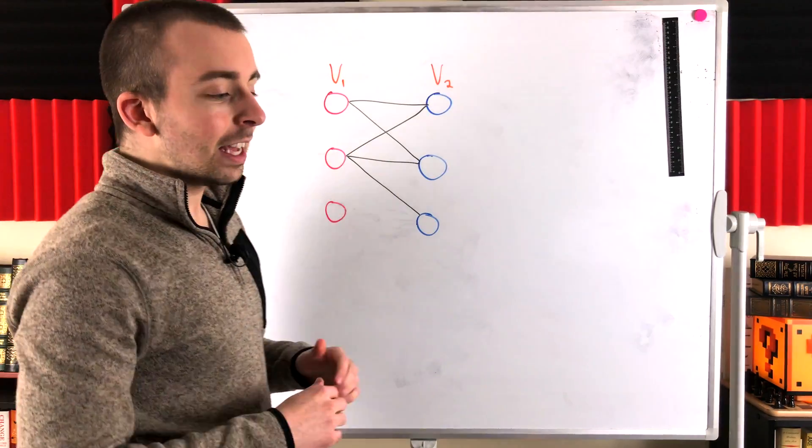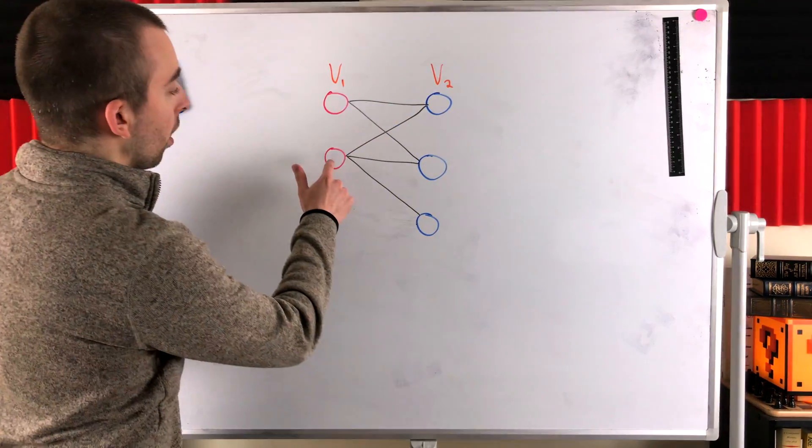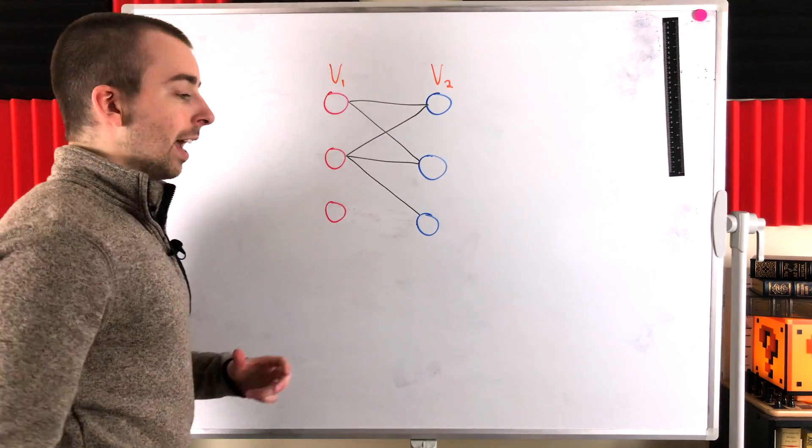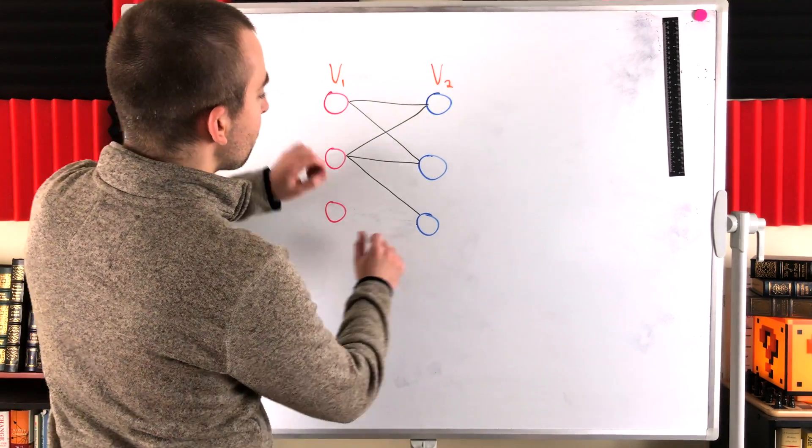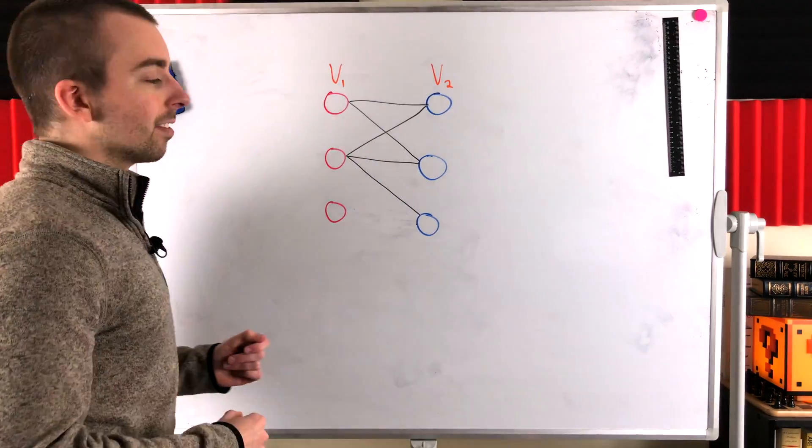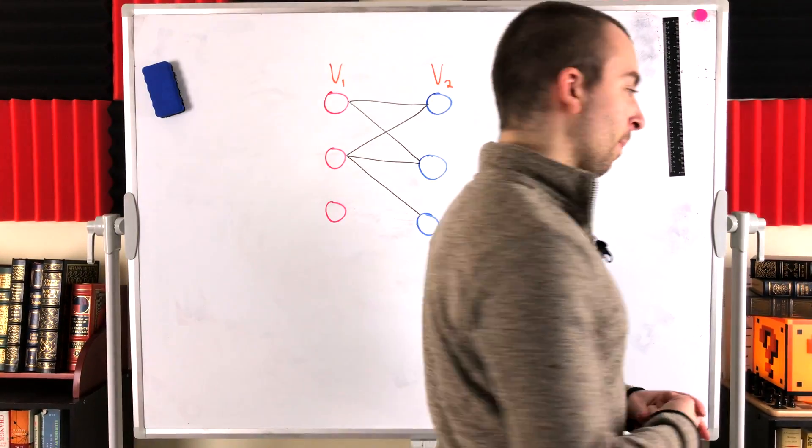seen here, such that every edge goes from one partite set to the other, and no two vertices in the same partite set are joined by an edge. So clearly this is still a bipartite graph.